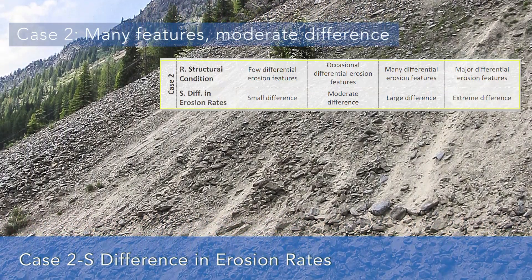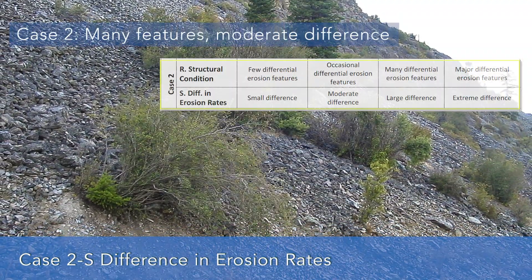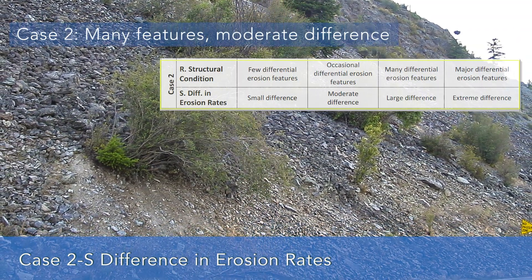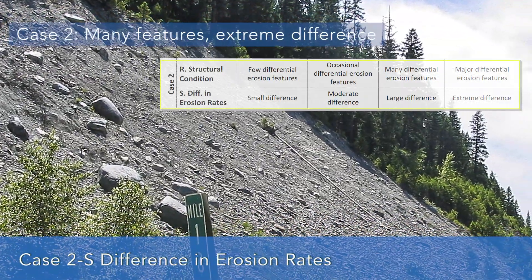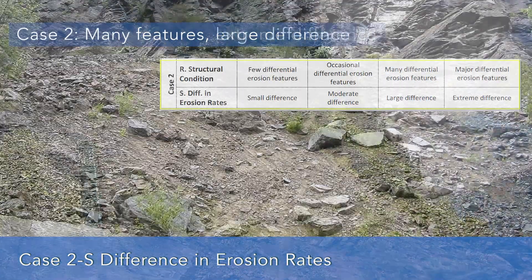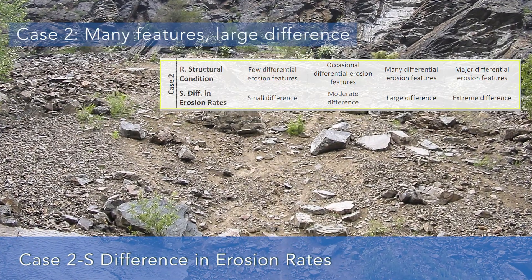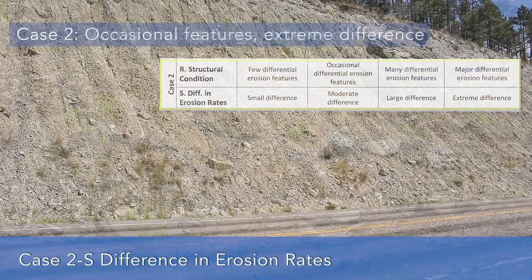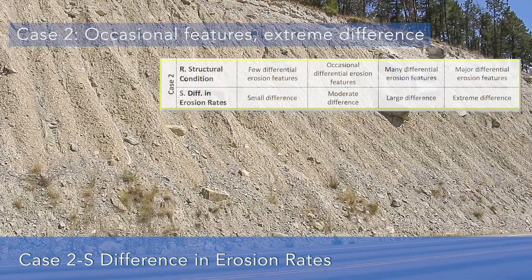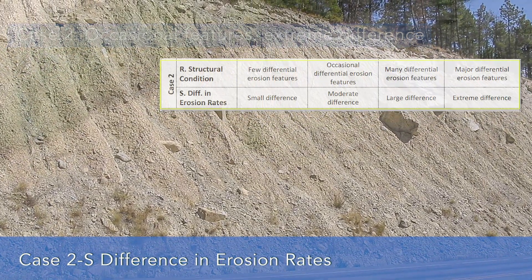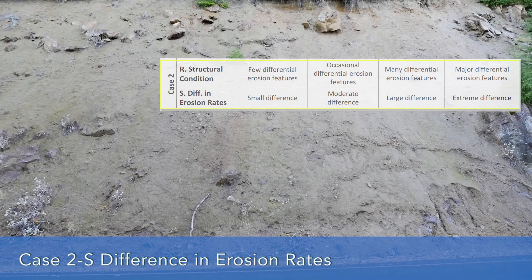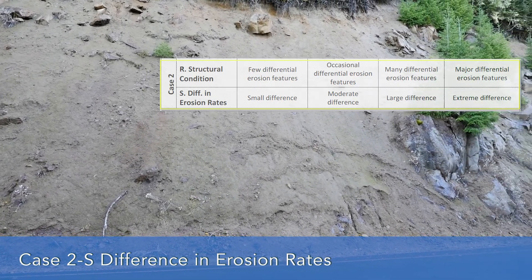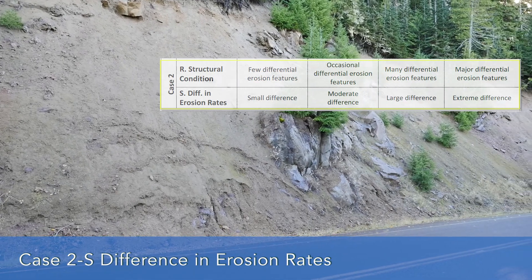Category S approximates the difference in erosional rates between the different geologic units on the slope, ranging from a small difference to an extreme difference. For instance, sandstone to siltstone interbeds may erode close to one another or quite differently. Rocks or large boulders in a glacial outwash slope with silt and sand also represent an extreme difference. On this slope in front of us, based on the quantity of material that maintenance has to remove, I'm going to rate this as an extreme difference — 81 points.